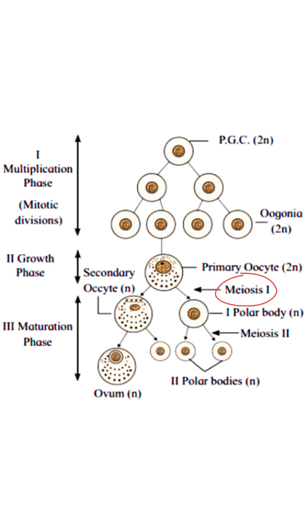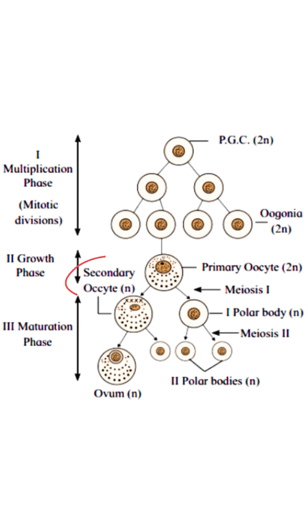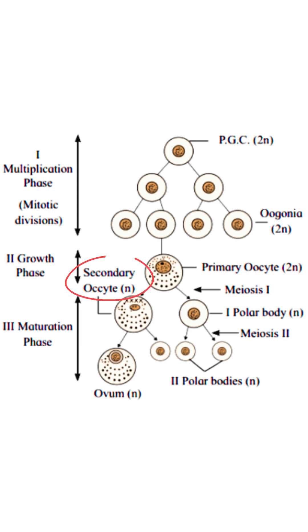Meiosis produces two unequal haploid cells. The smaller cell is called the first polar body, which has a very small amount of cytoplasm. The larger cell is called the secondary oocyte, which has maximum nutrient-rich cytoplasm. Both are haploid and have half the chromosome number. The secondary oocyte then undergoes meiosis II.